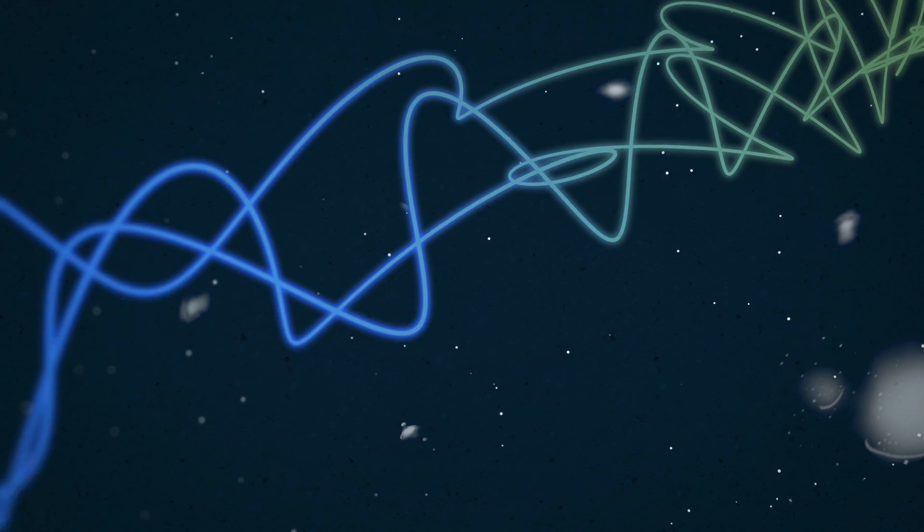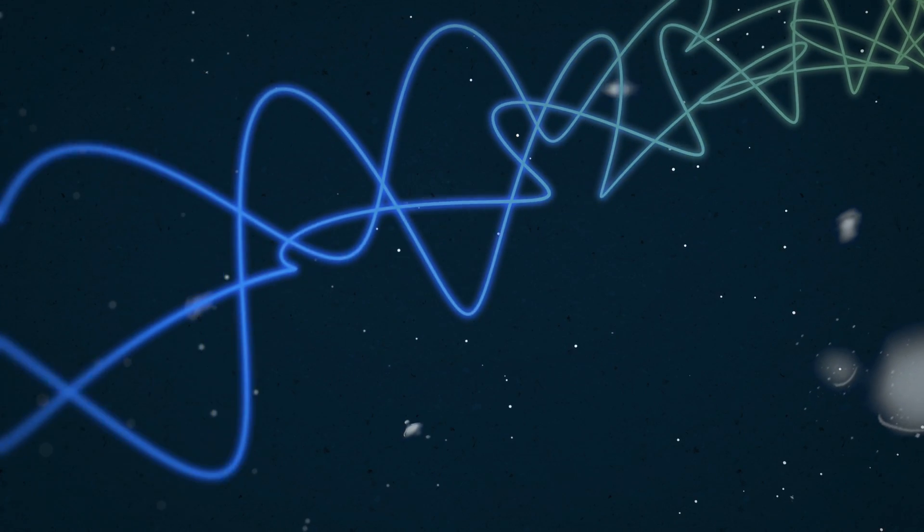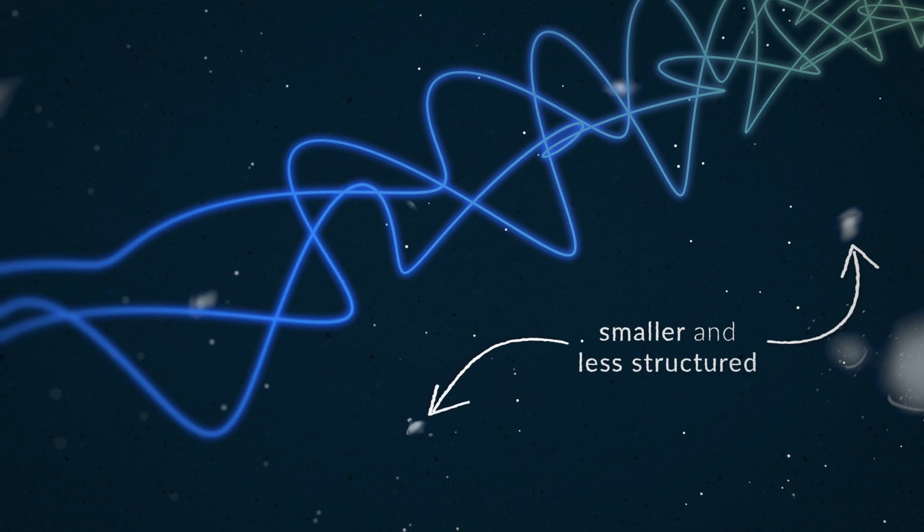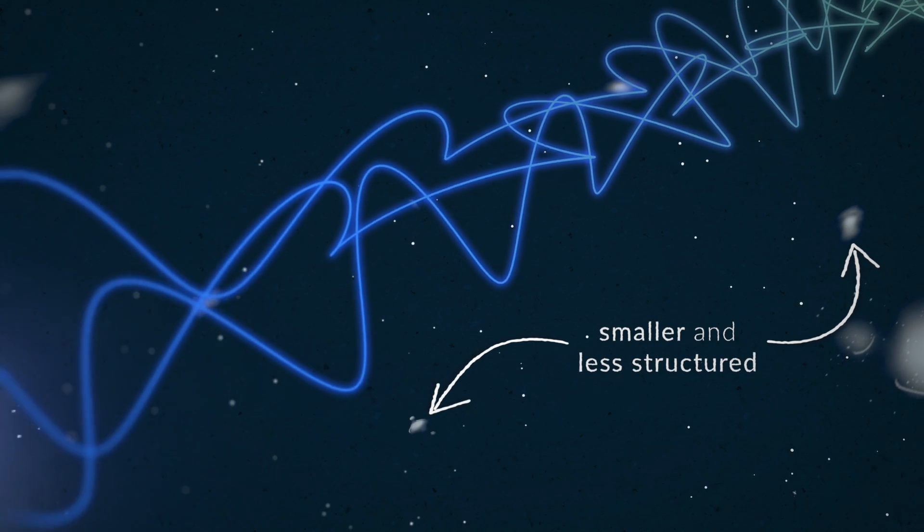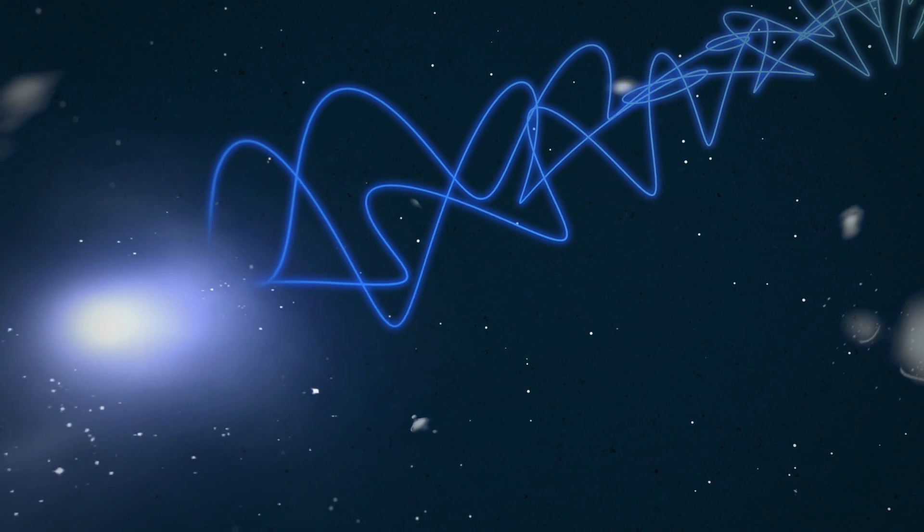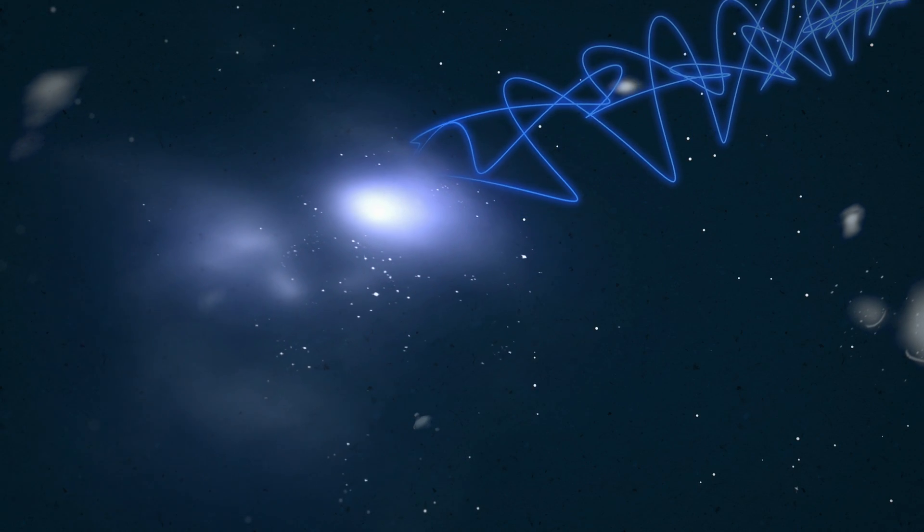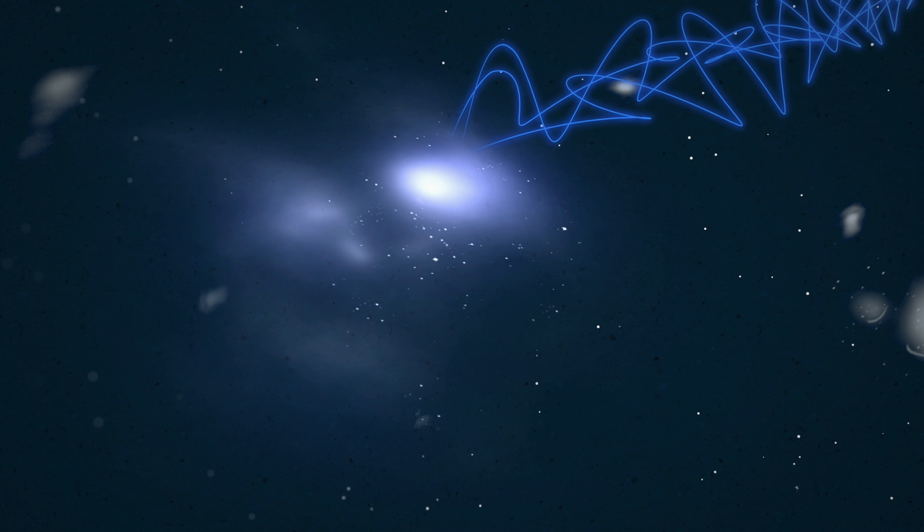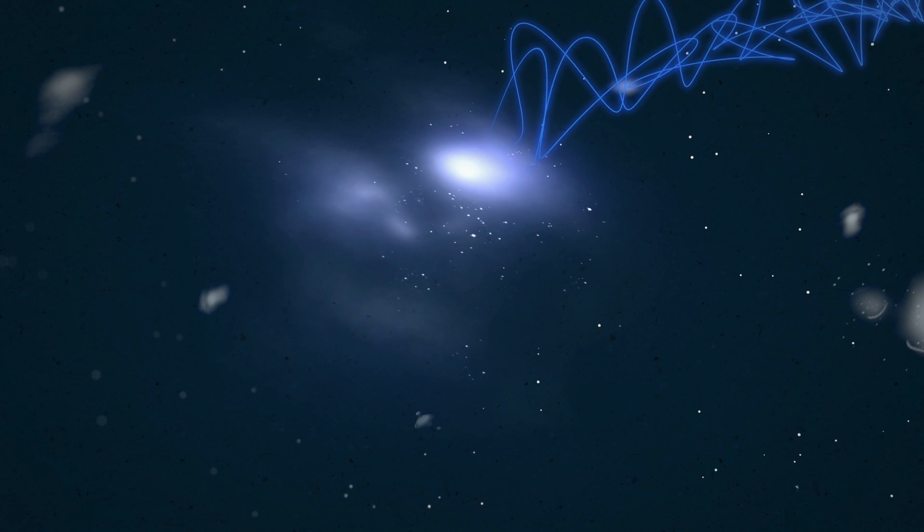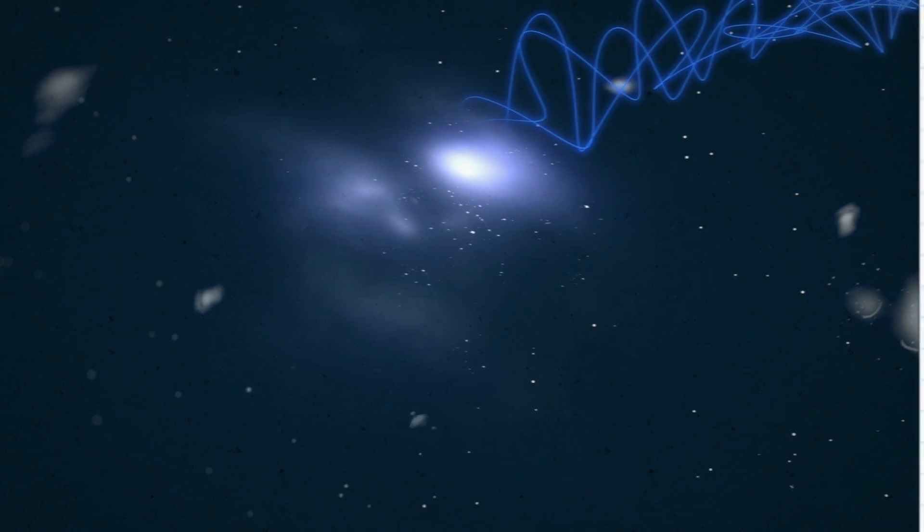The most distant, earliest galaxies we have seen tend to be smaller and less structured than those in the nearby universe. How did galaxies evolve over billions of years from the early universe to the era of our own Milky Way? How can we learn about the forces that drive this change?